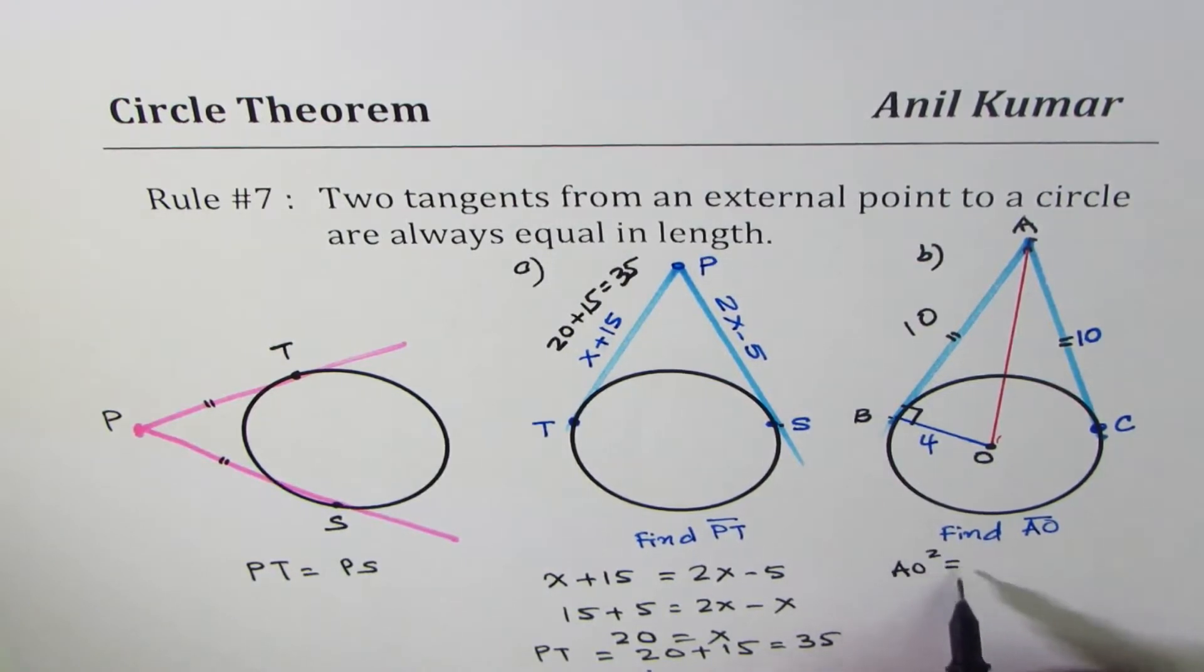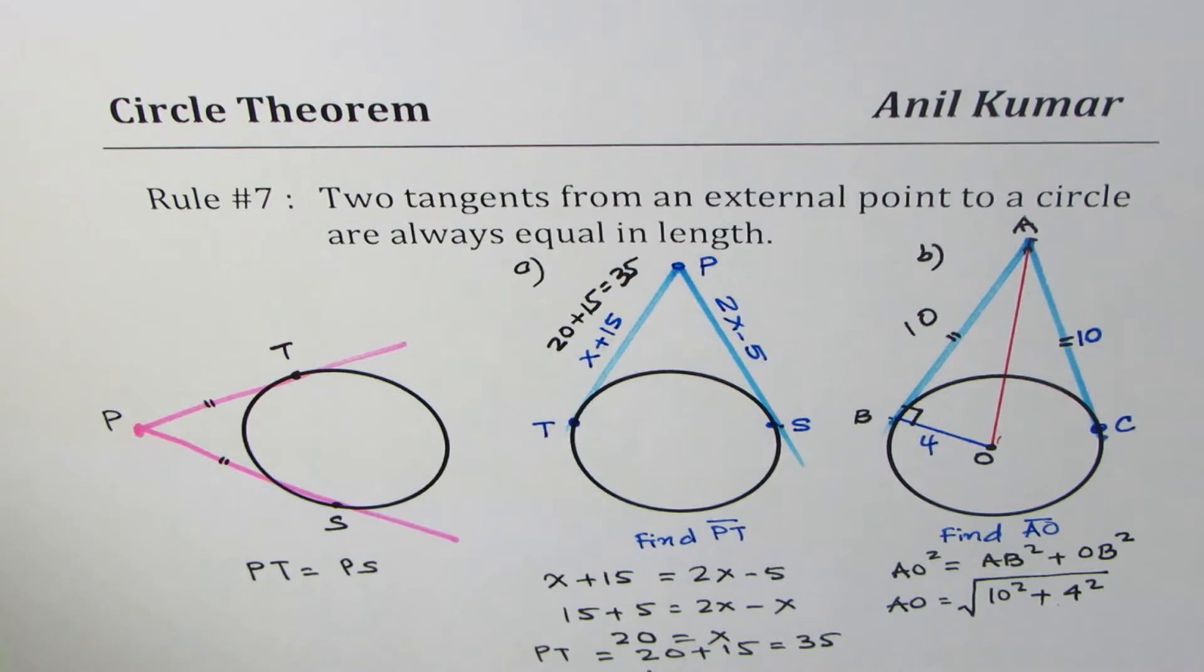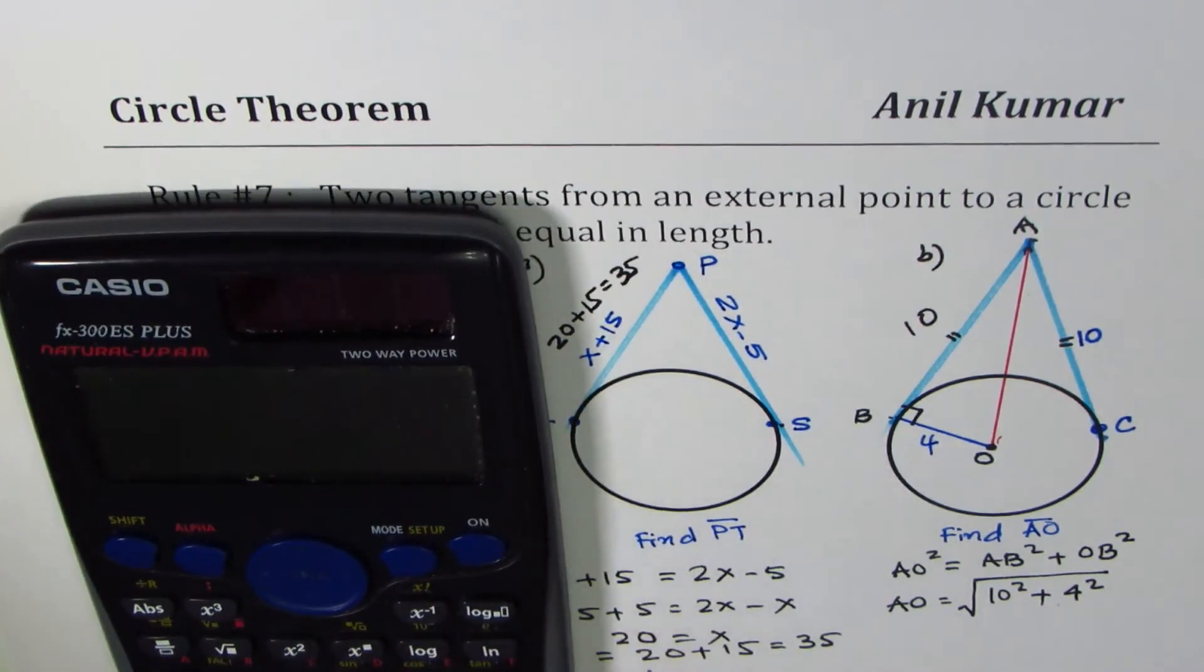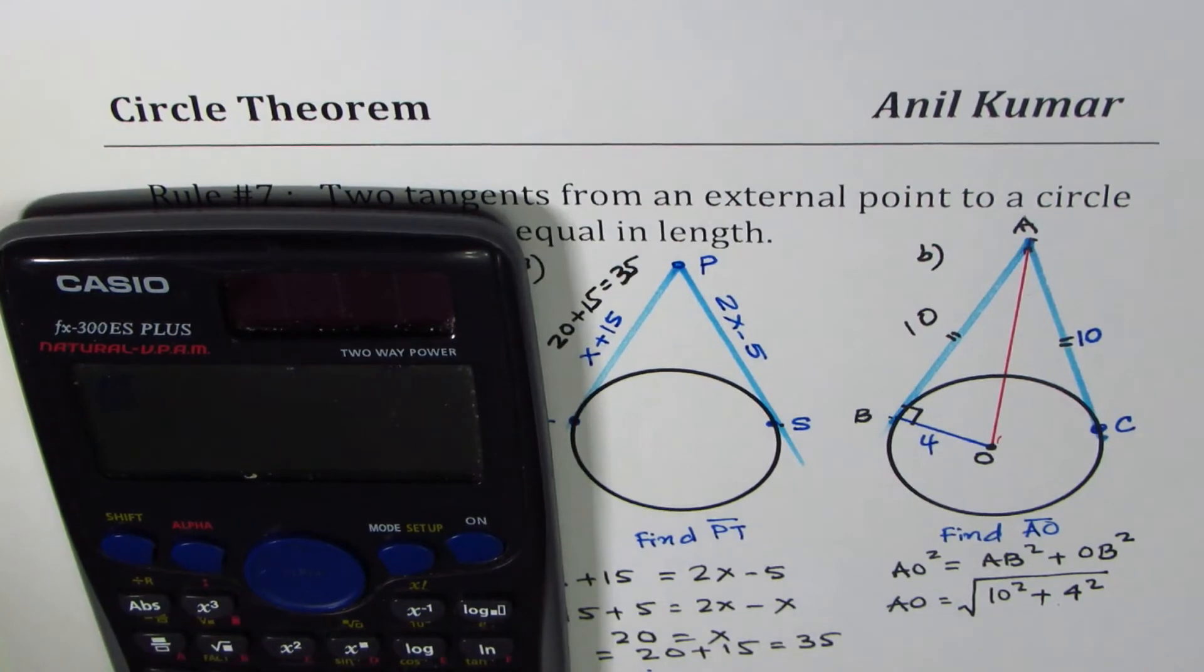Therefore, AO square should be equal to AB square plus OB square, or AO is equal to square root of AB square, which is 10, 10 square, plus 4 square. So we can always use calculator to find this answer, 116, so square root of 116. So you could do square root of 116 is equal to 2 square root of 29.